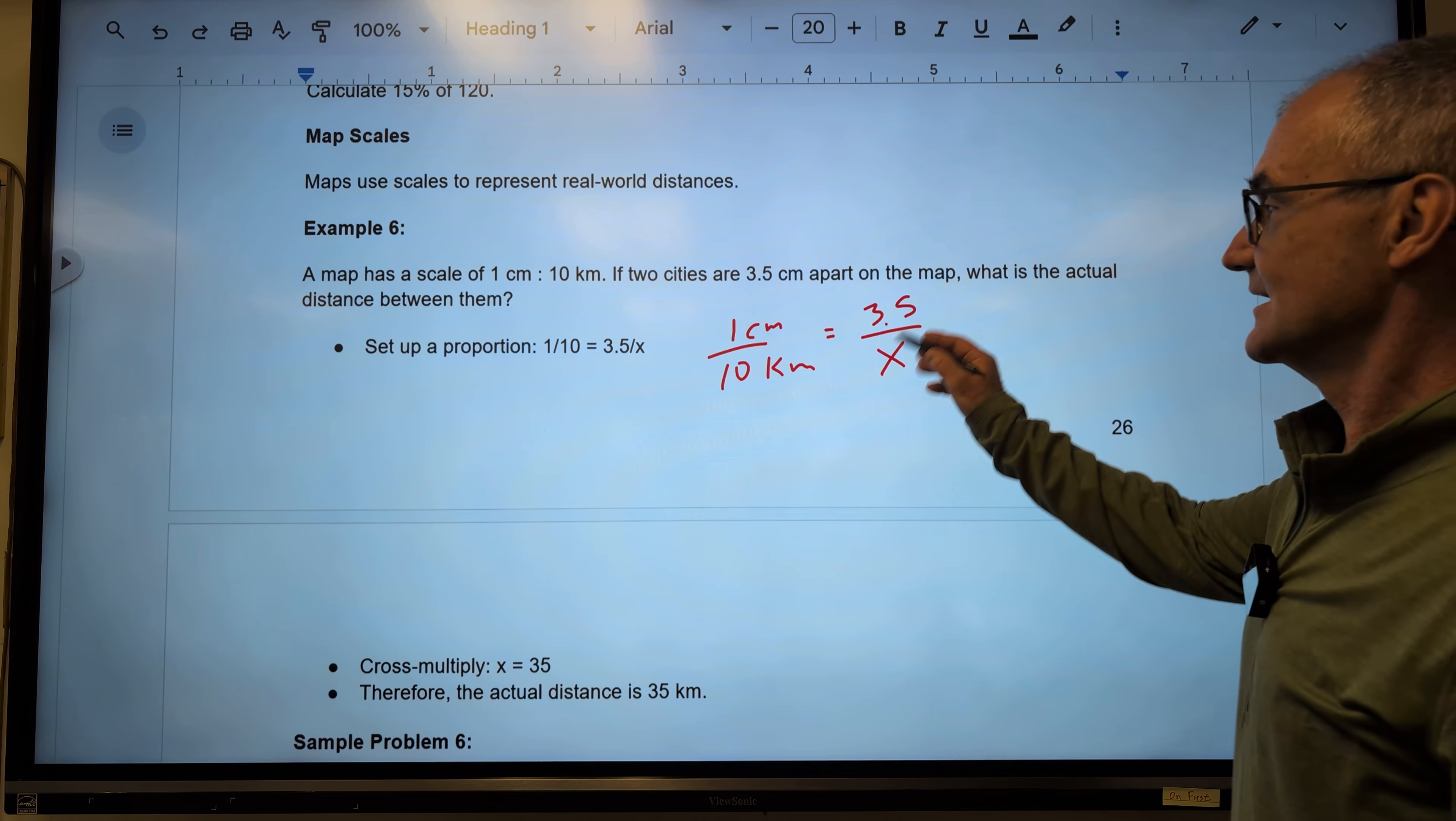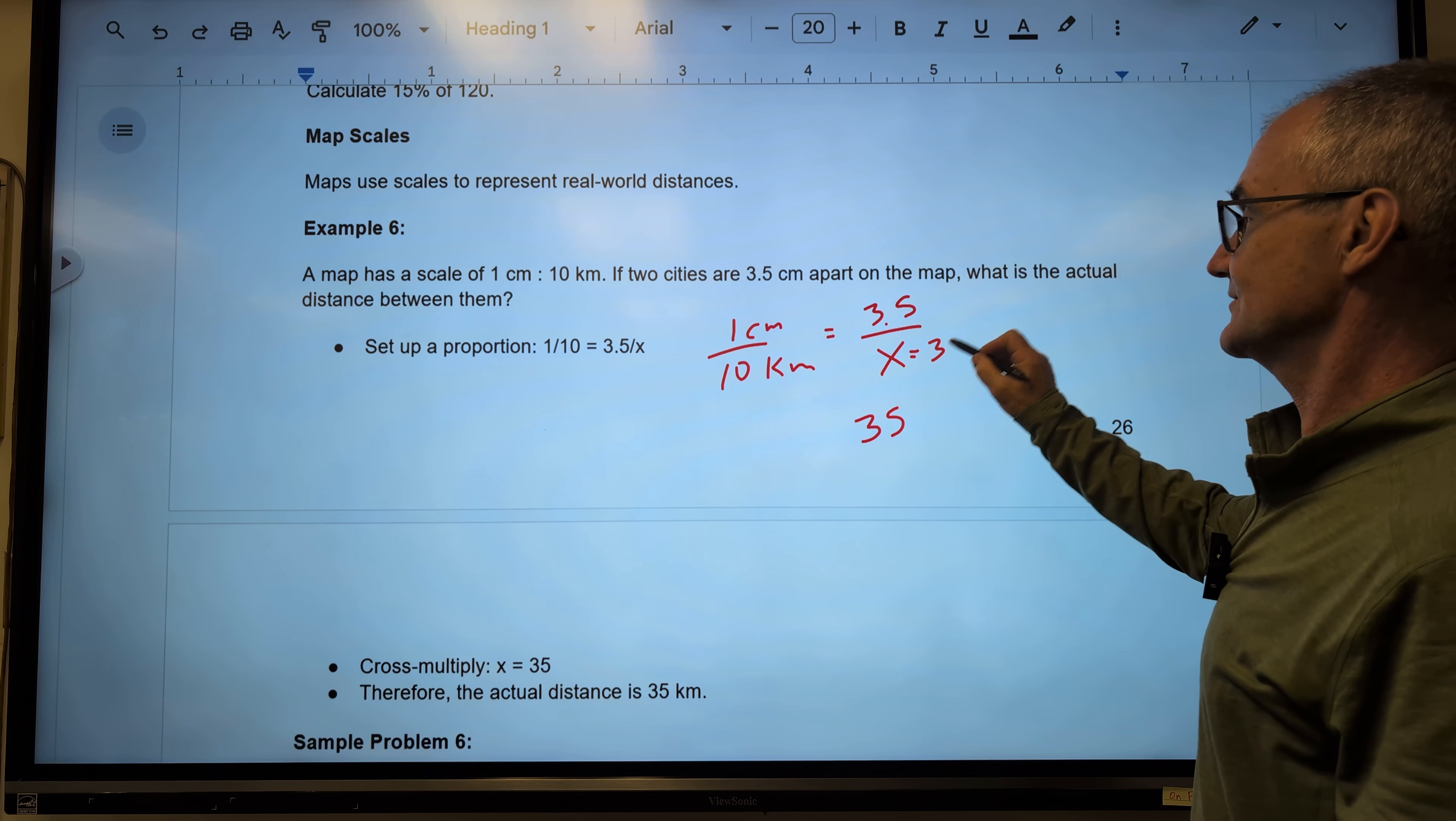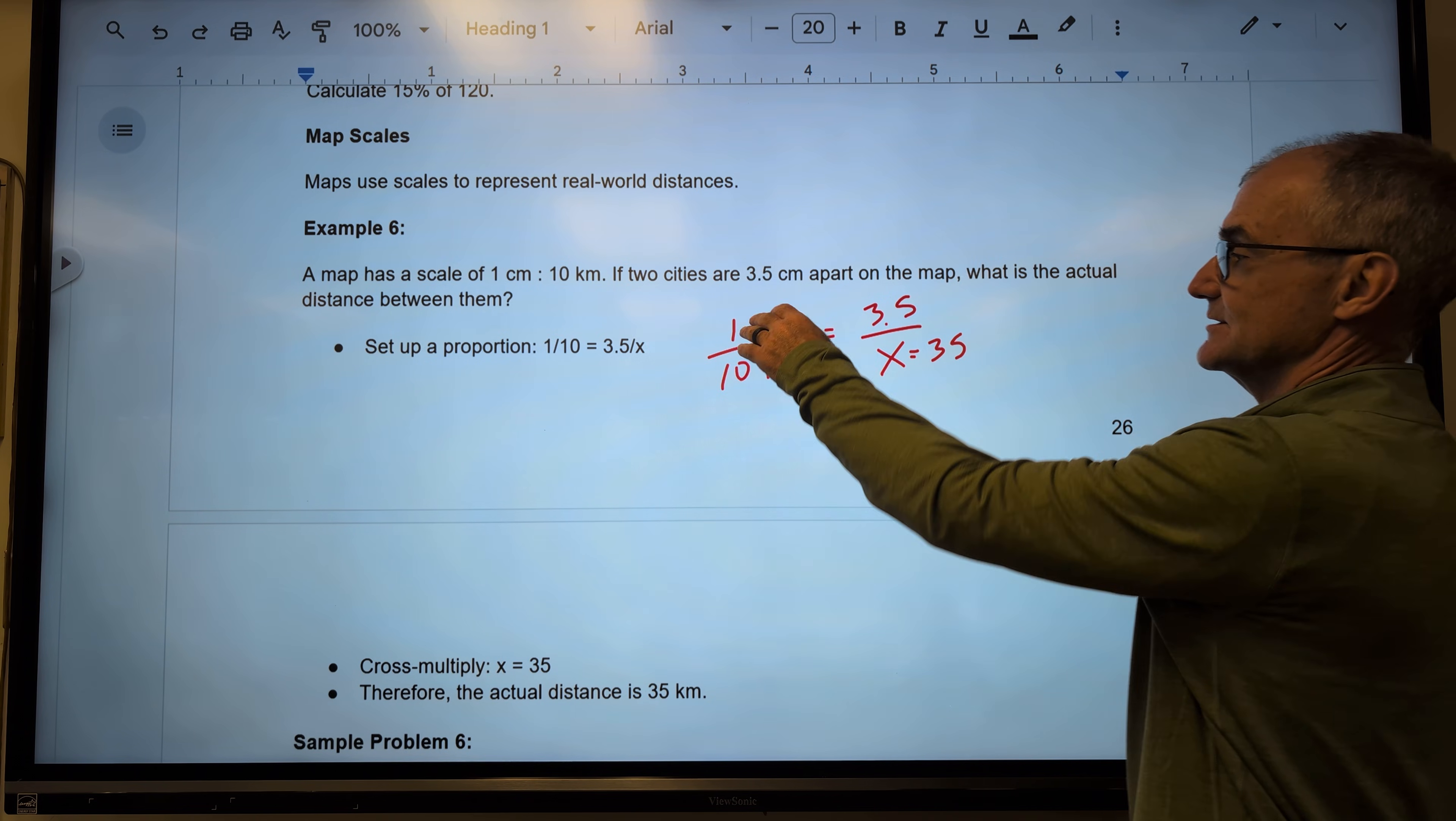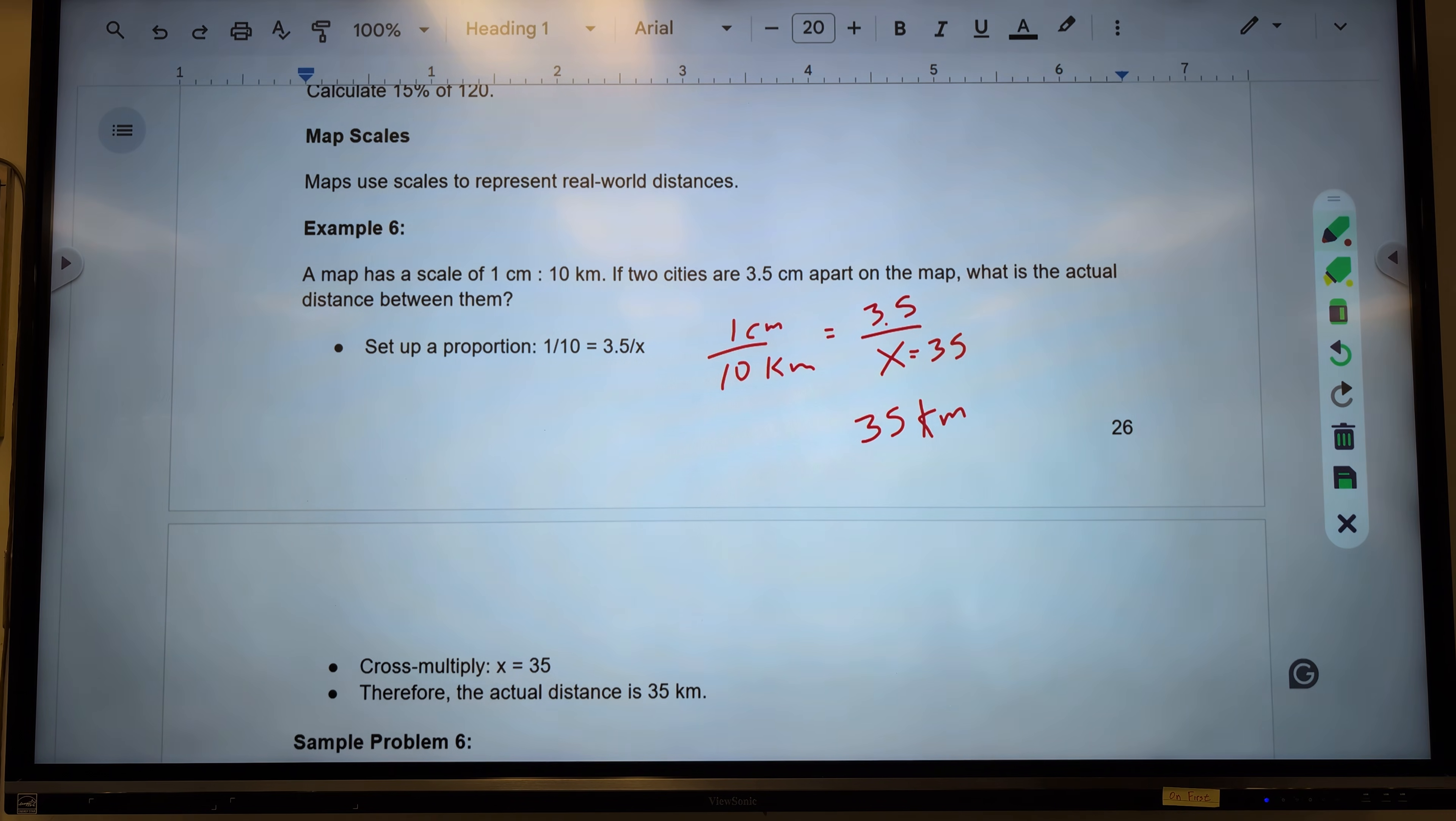That's what I'm looking for. I cross-multiply 10 times 3.5 is 35. So this answer is 35. And that kind of makes sense, too. If one centimeter is 10 kilometers, then 3.5 centimeters is 35 kilometers. Keep your units on there.